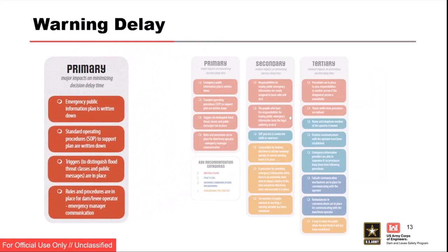Warning delay primary components: plan is written down, SOP to support the plan is written down, triggers. Warning delay — think of writing down an actionable threshold. This is a big one. If we reach a certain point in our river and we know we need to start moving people, that could happen well before a breach occurs, which could really drive down consequences. When you have dams and levees, rules and procedures in place for how to communicate with the emergency manager are essential. In the absence of this, an ad hoc approach where people are figuring things out on the fly can extend this delay significantly — meaning a warning could go out hours later instead of minutes, which can significantly increase the number of people exposed to a life-threatening hazard.